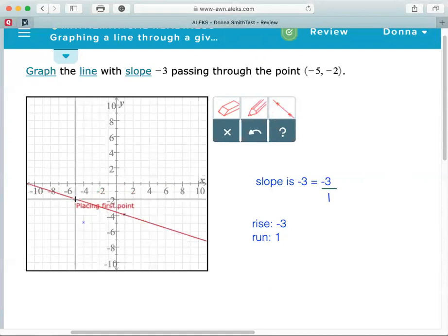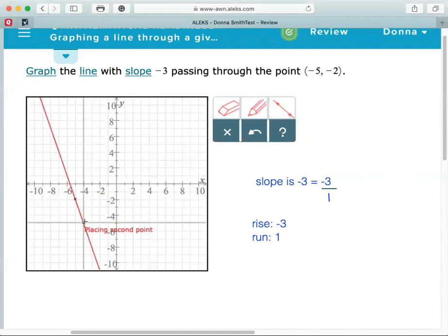We can use our plot line tool, select the first point, select the second point, and that gives us the graph of the line that goes through negative 5, negative 2 with the slope of negative 3.